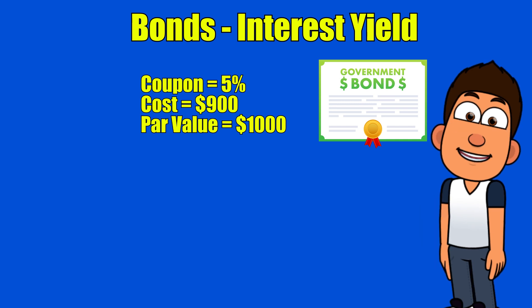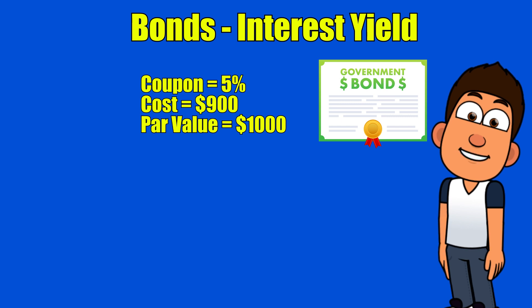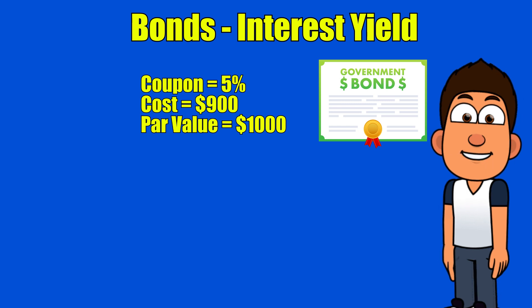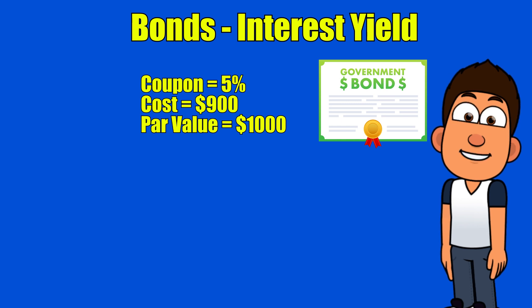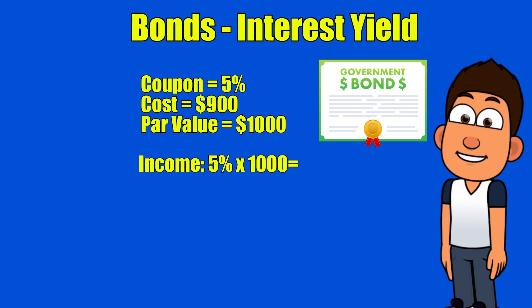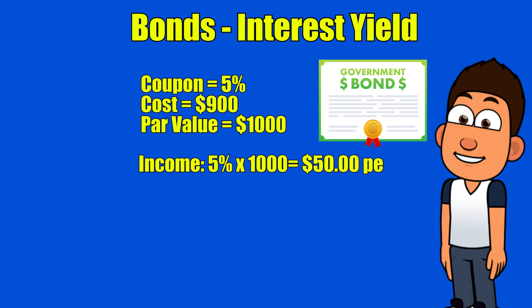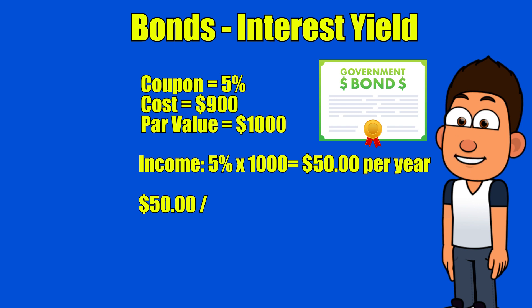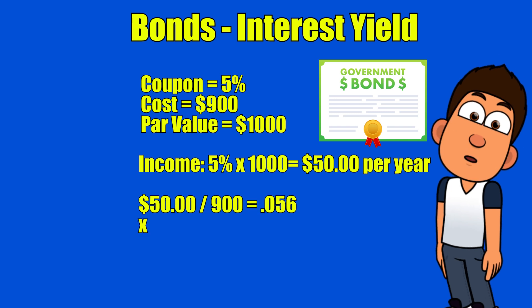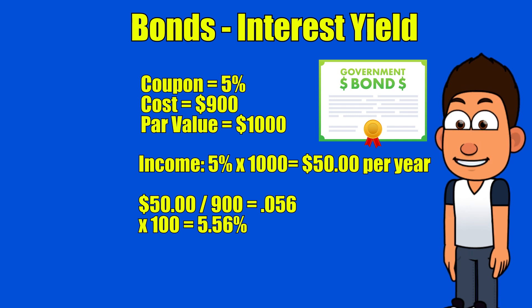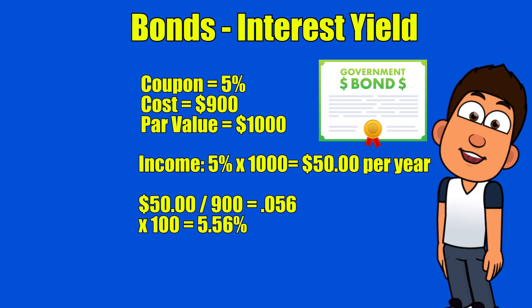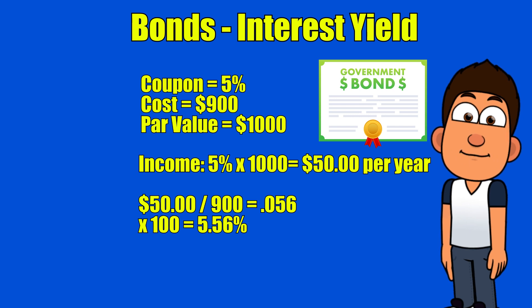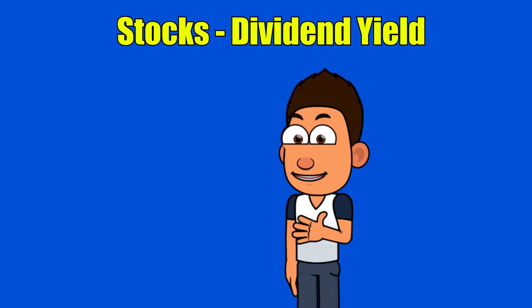Let's look at an example. Say you want to buy a government bond with a coupon of five percent that currently costs nine hundred dollars, and the par value is one thousand dollars. To calculate yield, income would be five percent of the thousand dollar face value, or fifty dollars per year. We divide fifty dollars by the market price of nine hundred, getting 0.0556, and multiply by one hundred to get five point five six percent.